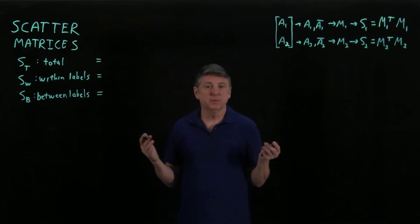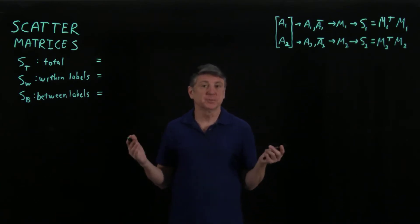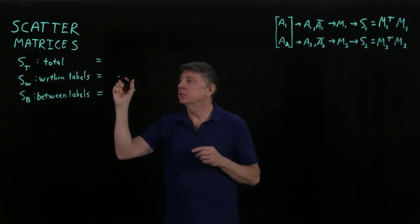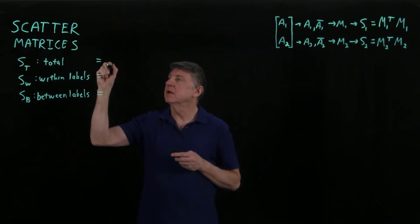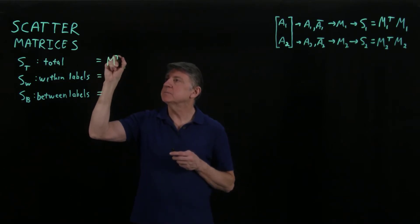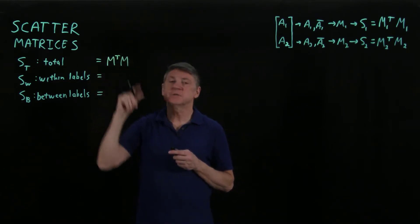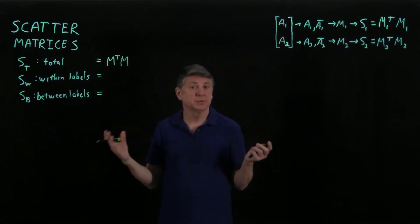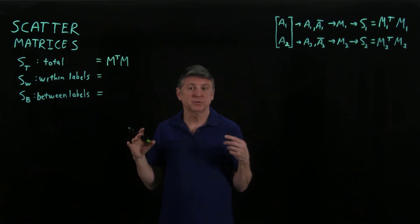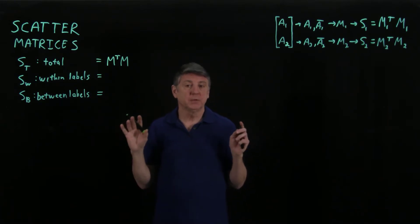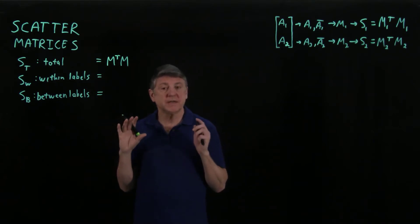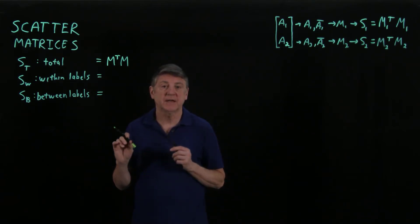If we were trying to do principal components analysis of unlabeled data, we would use the total scatter, that is the transpose of the zero mean matrix times the zero mean. What Ronald Fisher in 1936, when he was exploring his iris data, proposed was that we really want to divide the data according to the labels and take these labels into account in our analysis.